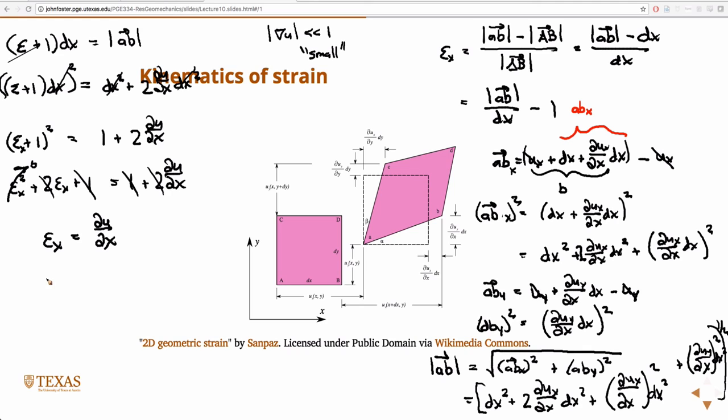Likewise, we could go through all those same arguments and come up with a similar, for ey, it's partial u partial y. And, of course, if this was three dimensions, then we'd also have epsilon z, partial u partial z.